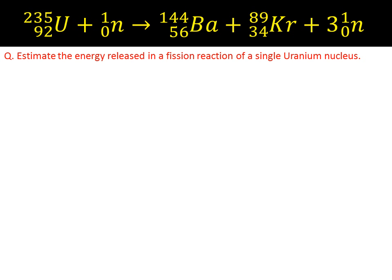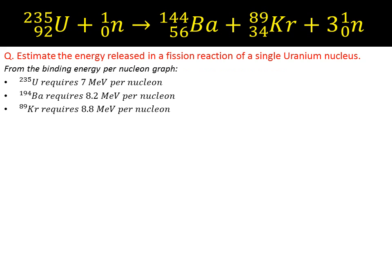The question you'll usually get is estimate the energy release in a fission reaction such as the one shown there. We can use our nucleon graph, the binding energy graph, to estimate the amount of energy in megaelectron volts per nucleon. These numbers aren't exact, they're just estimates from the graph.